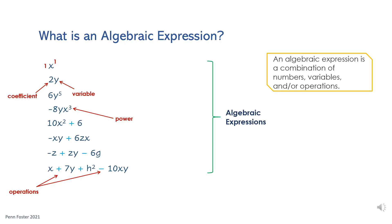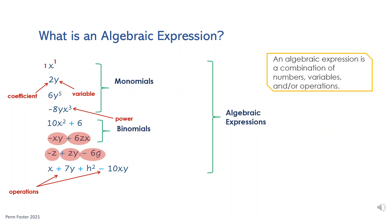Expressions are categorized based on how many terms they have. Terms are separated by either a plus or minus sign. So this expression has two terms and this one has three terms. An expression with one term is called a monomial. If it has two, it's a binomial. If three, trinomial. And if more, a polynomial.